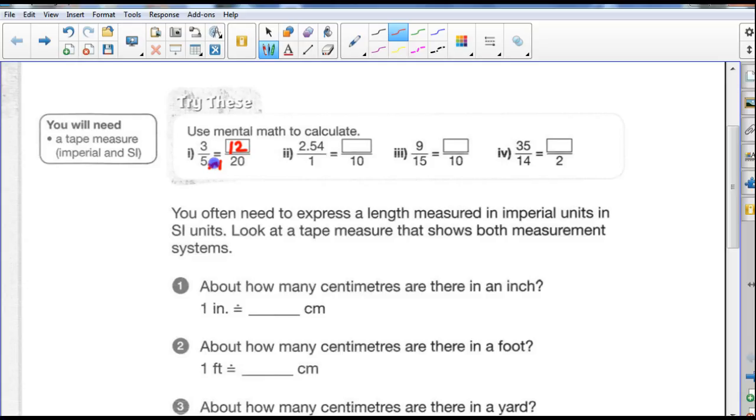Okay, we have 2.54 over 1. Well, to go from 1, the denominator of 1 to the denominator of 10, we multiply it by 10. So we want to have the equivalent fraction. We multiply the top by 10 as well. And to multiply by 10, what we learned before is we just need to move the decimal point one spot to the right when we're multiplying. So this becomes 25.4 over 10.